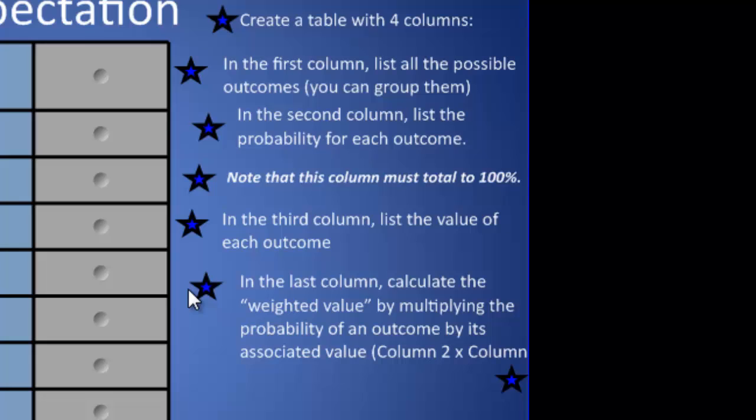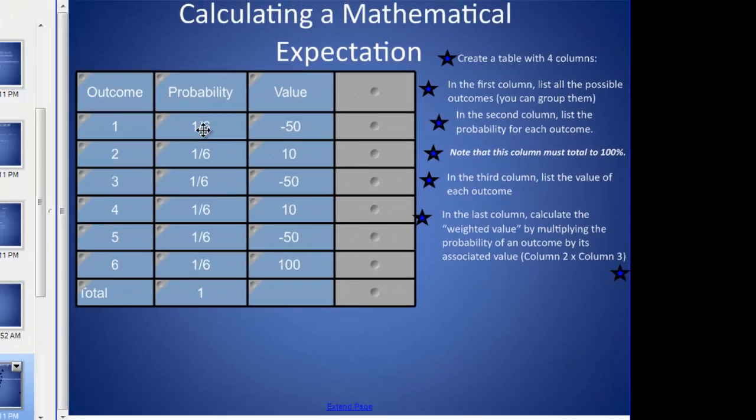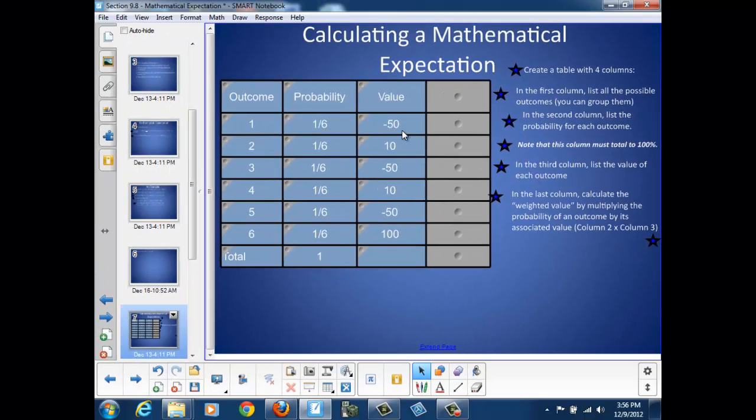Finally, in the last column, we're going to calculate the weighted value by multiplying the probability of an outcome by its associated value. So what we're going to do is we're going to multiply column 2 by column 3, the probability times the value. That gives us our weighted value. So, 1 sixth of negative 50, 1 sixth of 10, 1 sixth of negative 50 again, 1 sixth of 10 again, 1 sixth of negative 50, and finally, 1 sixth of 100.